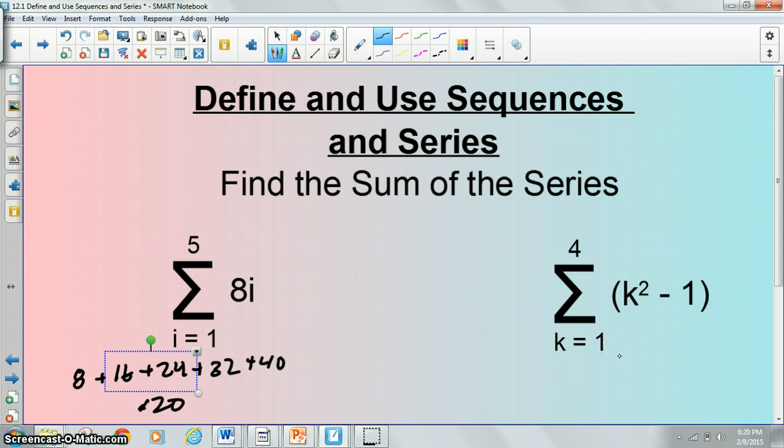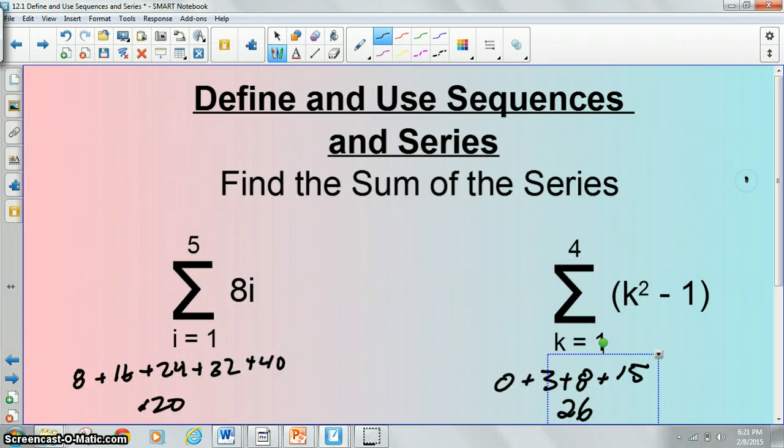Why don't you guys try this one? Or at least get a head start on this one while I drink my tea. So you plug in 1. Remember, like I said, the variable here doesn't matter, as long as it matches here. So you plug in 1, 1 squared is 1, minus 1 is 0. Iterate up to 2. 2 squared is 4, minus 1 is 3. Then 3. You get 8. And then 4, which is our max. You get 15. So your answer is 26. Hopefully that makes sense.